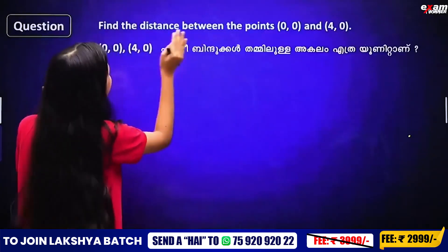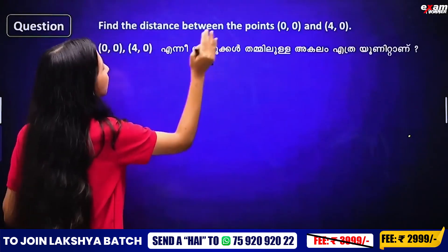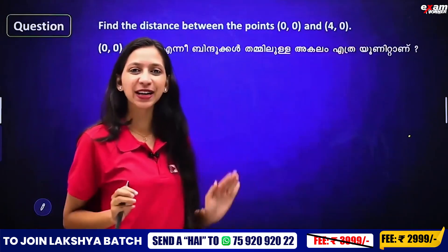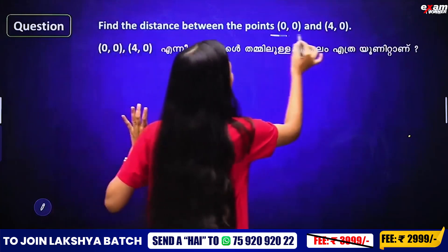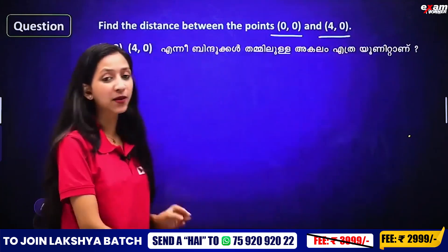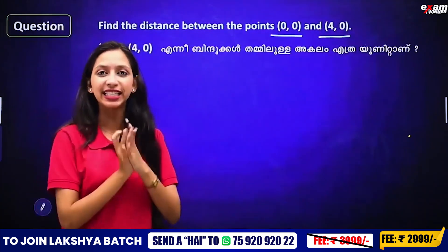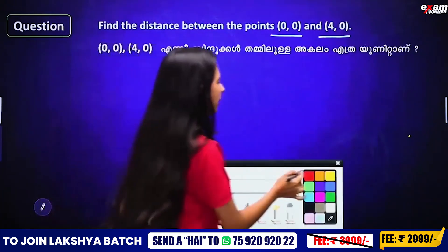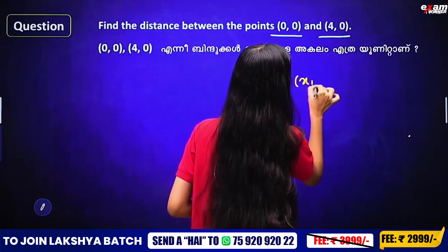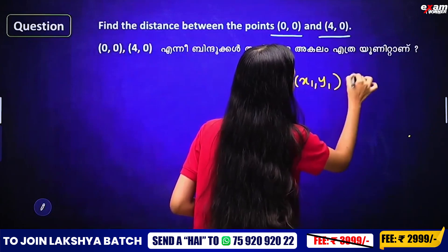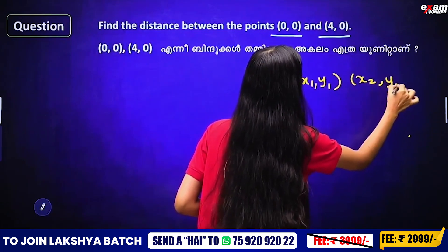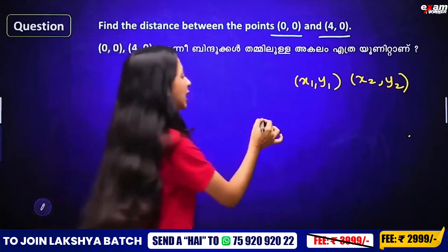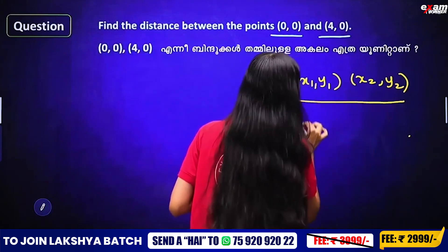Find the distance between the points (0, 0) and (4, 0). These are two points. We need to calculate the distance between these two points. We have two points: x1, y1 and x2, y2. We can calculate the distance between them.